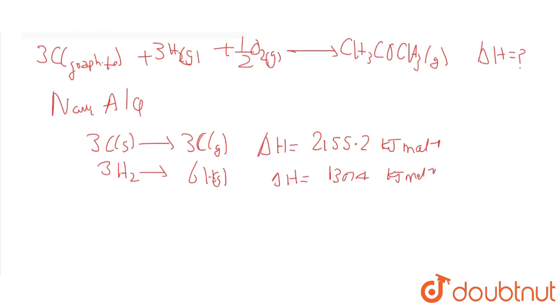If we write it like this: 3 C gas plus 6 H gas plus O gas gives CH3COCH3 gas.